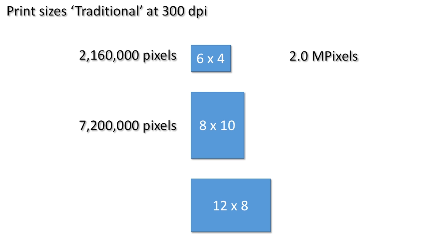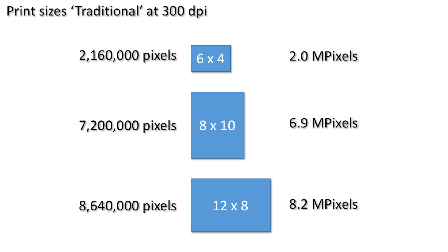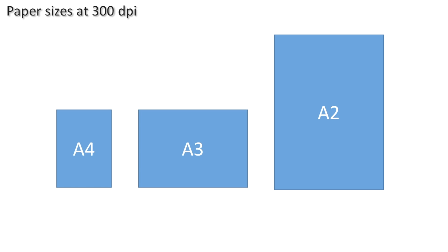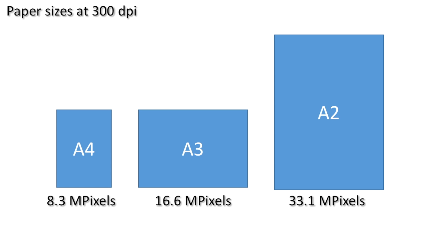An eight by ten print requires a camera that can produce an image of six point nine megapixels or above at 300 DPI, and a twelve by eight needs eight point two megapixels or above. Looking at paper sizes: A4 requires eight point three megapixels, A3 sixteen point six, and A2 thirty three point one.